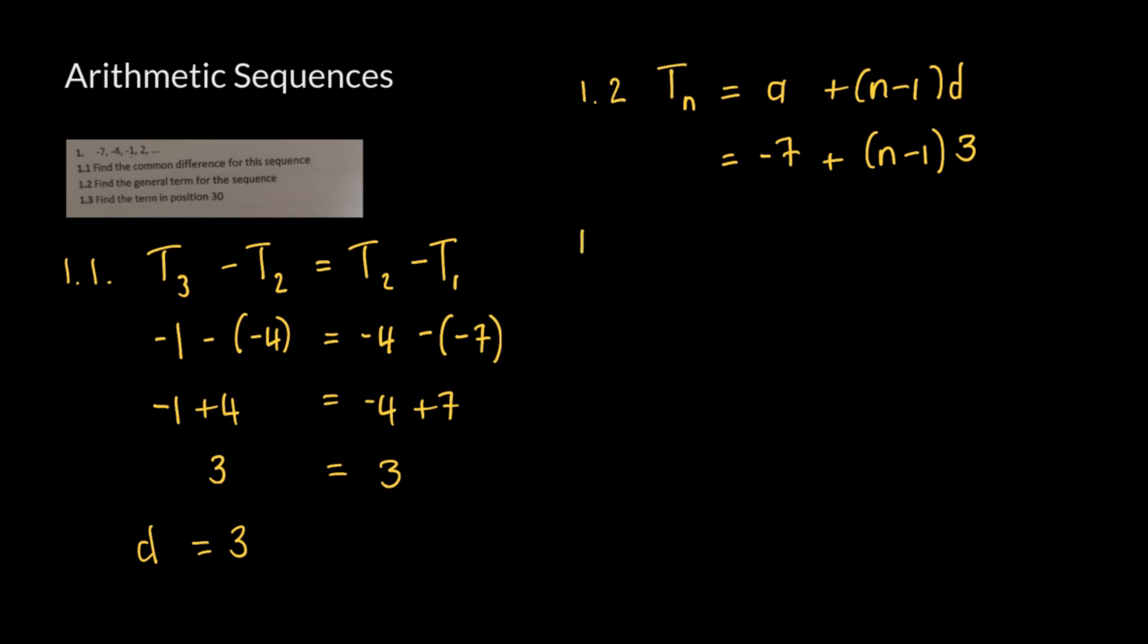Now in 1.3, we're going to have to use what we got in 1.2 to answer that question. It says find the term in position 30, which means they're looking for T₃₀. So T₃₀, and in this case wherever we see an n, we're going to replace it with 30. So what we're going to get here is negative 7 plus, we're going to open our brackets, there's an n, so we're going to replace it with 30 minus 1 multiplied by 3, and then we're just going to simplify what we have here.